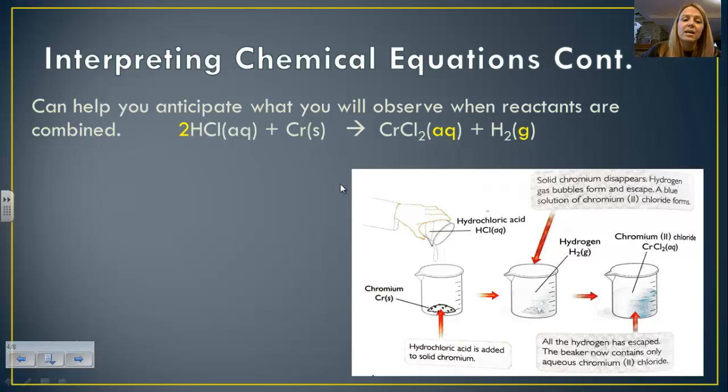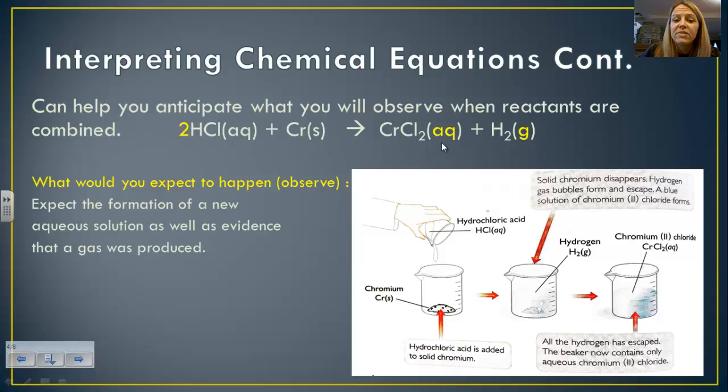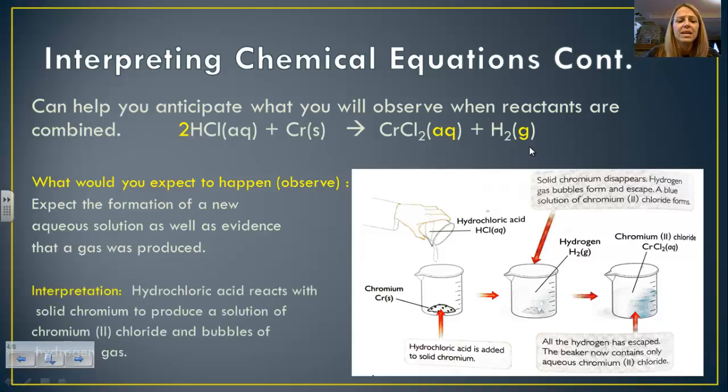When we look at a chemical equation, you look at the products, and these symbols here that tell us the states that they are in, the aq and g, helps us make predictions on what we should observe. So according to this equation, we should see the production of an aqueous solution and some type of bubbles in gas production. So that's what you would expect to happen or you would expect to observe. Then once we run the reaction, you then can make an interpretation.